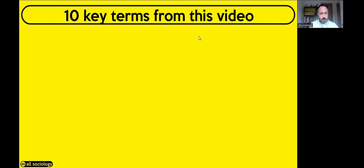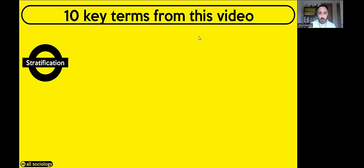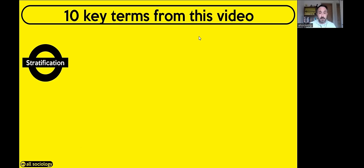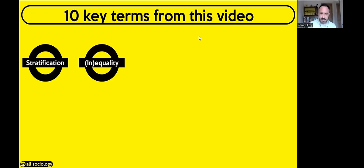We're well through the main content, so let me cover some key terms from this video. We've looked at the Functionalist view, the New Right view, and the Marxist view of stratification. First: stratification — it's a way of layering society or putting groups into layers. Functionalists base stratification on hardest workers versus non-hardest workers; Marx based it on the bourgeoisie and the proletariat; feminists based it on men and women.